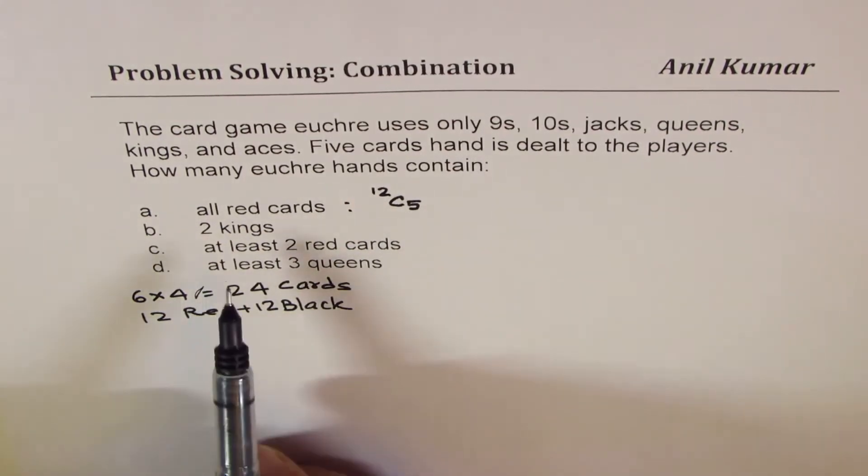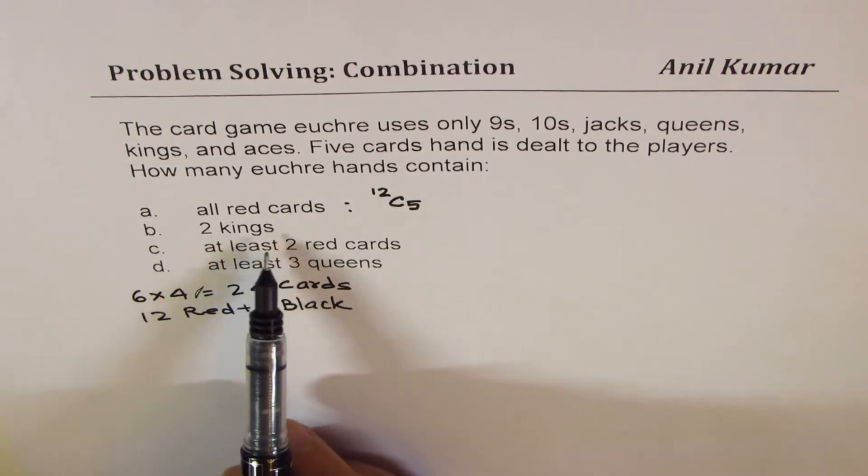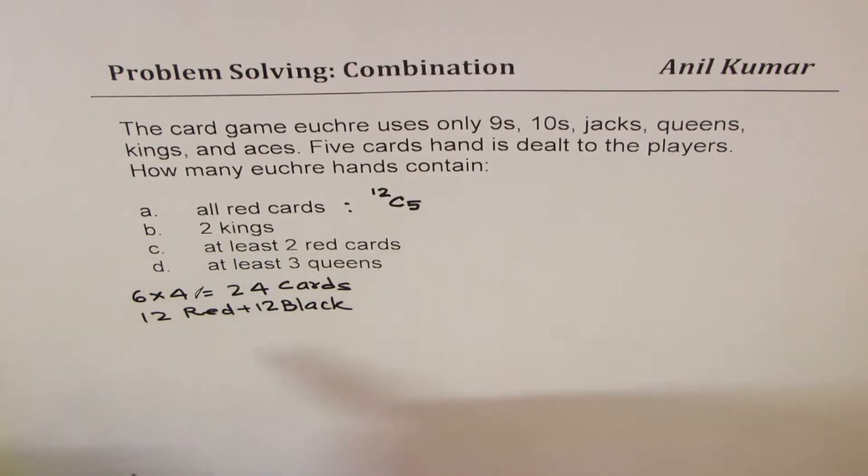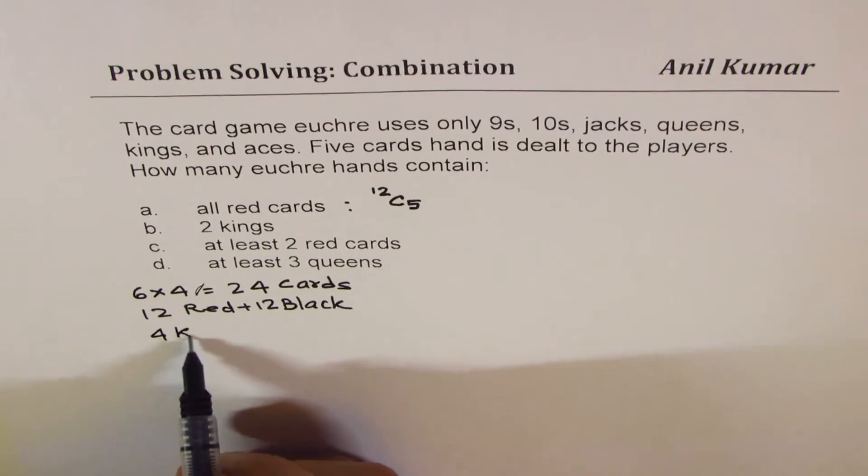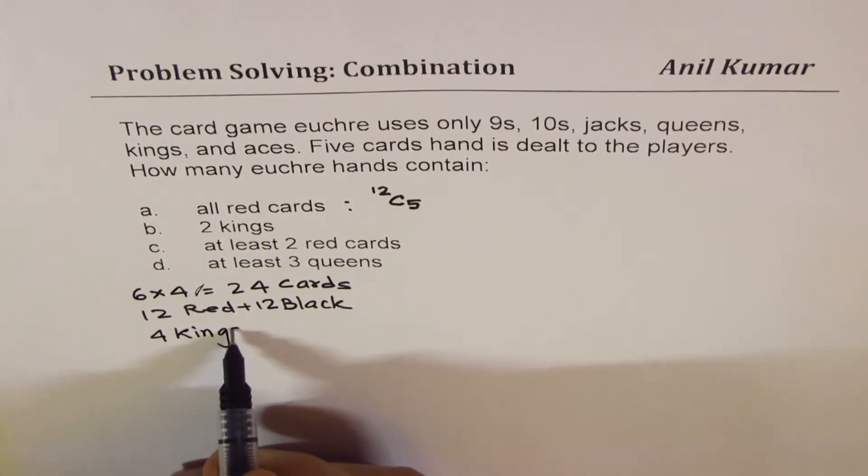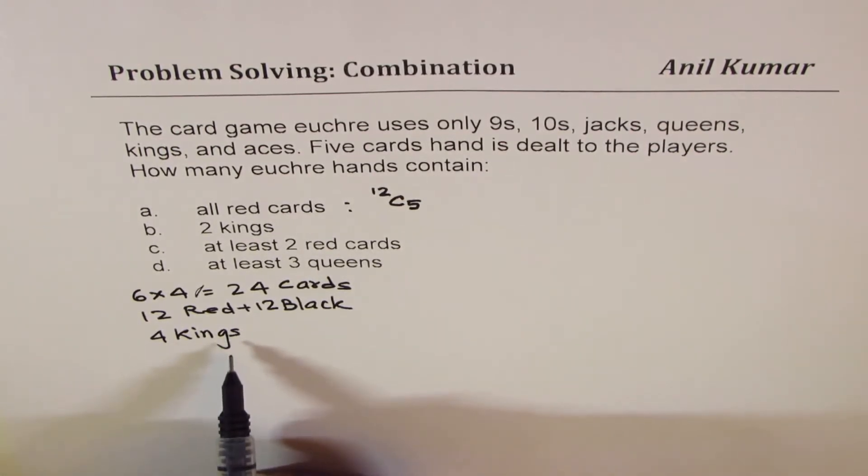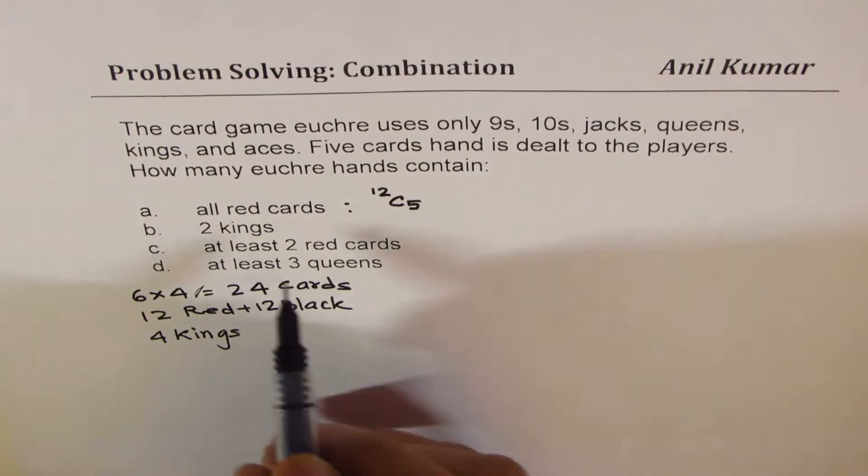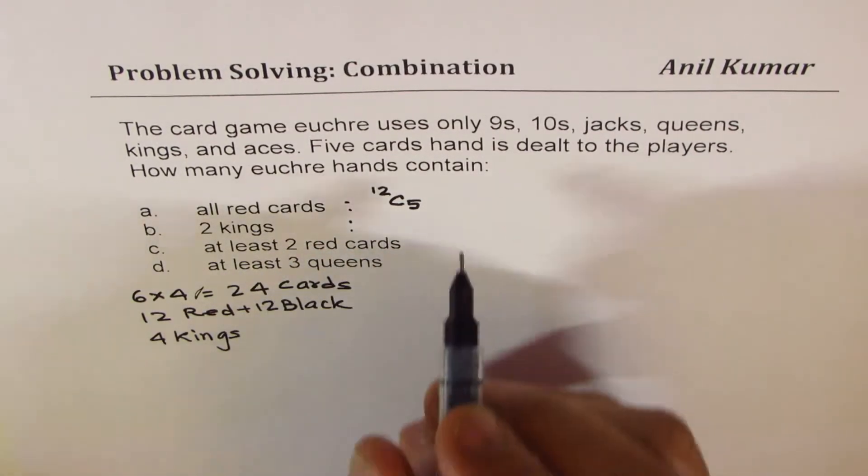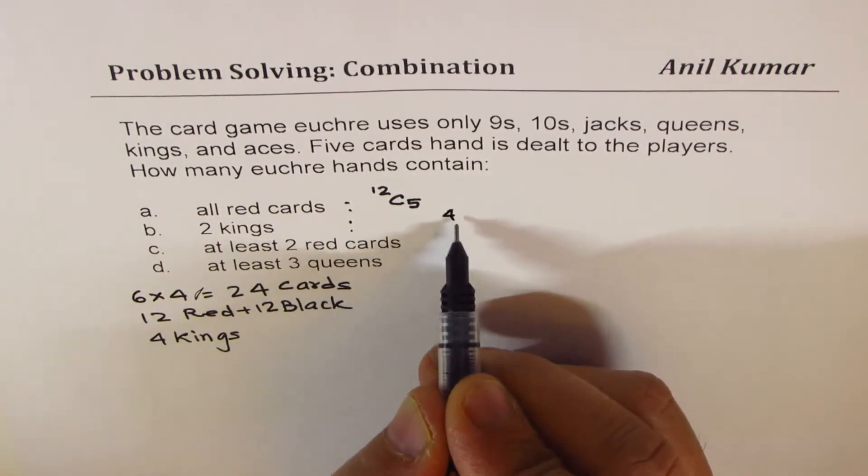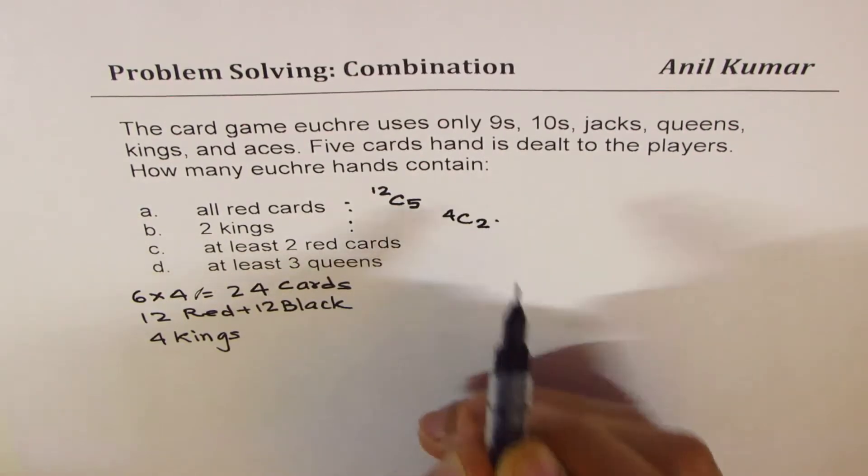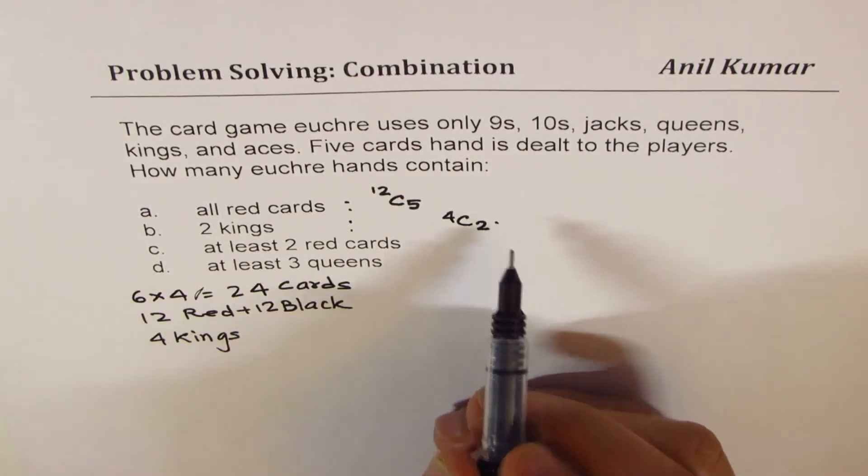The second one is we need two kings. So there are only four kings. So out of those four kings, we have to select two. So for two kings, we should get from four, combination of two kings, but there is a hand of five.